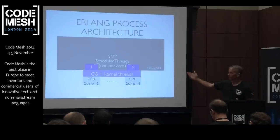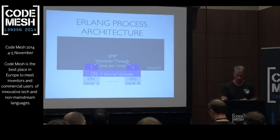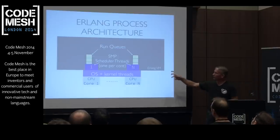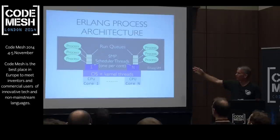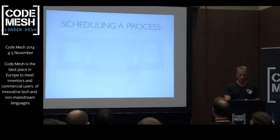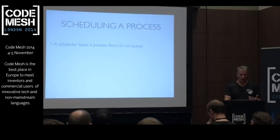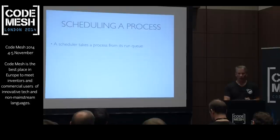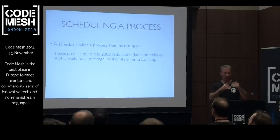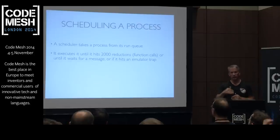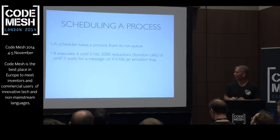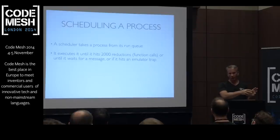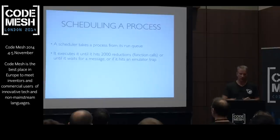What happens to schedule a process: a scheduler takes a process out of its run queue and starts running it — whatever the instructions are, running that set of function calls — and it's counting those, called reductions. It will run until you get 2,000 reductions, then the scheduler pauses that process and puts it back in the queue, takes another one. That's to keep things balanced so one process doesn't run all the time. If your code does a receive — waiting for a message — that also causes it to get scheduled out, or if it hits an emulator trap when calling a built-in function.